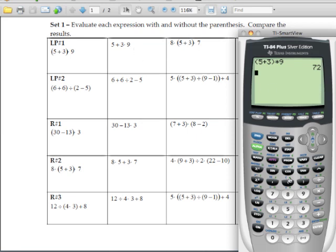Let's enter in the second one without the parentheses. We have 5 plus 3 times 9. Hit enter, and we come out with 32.